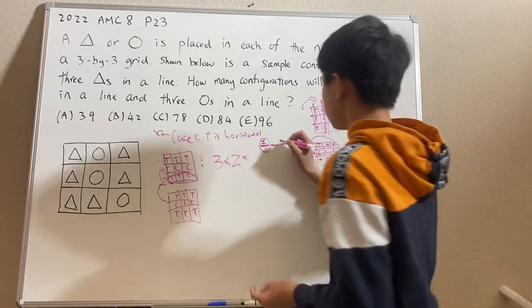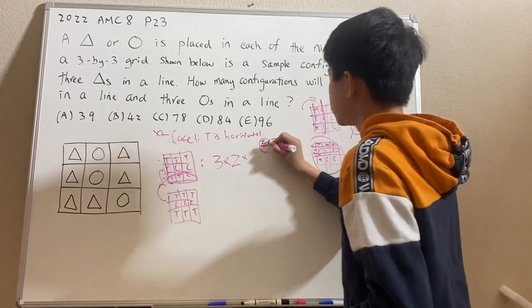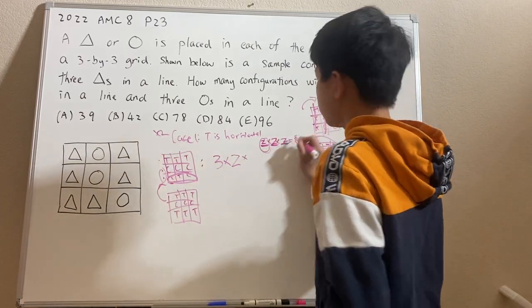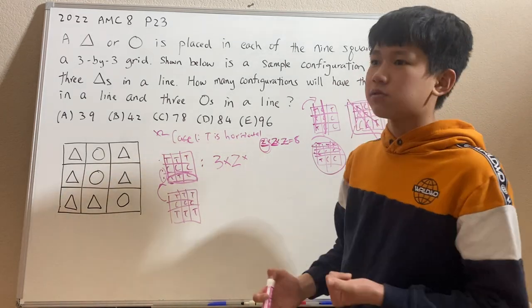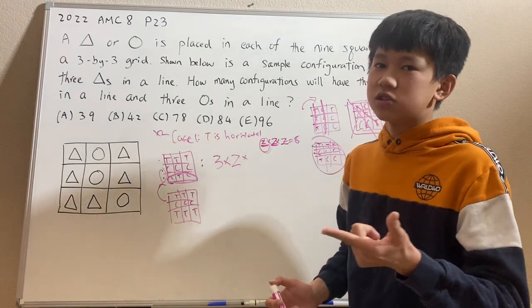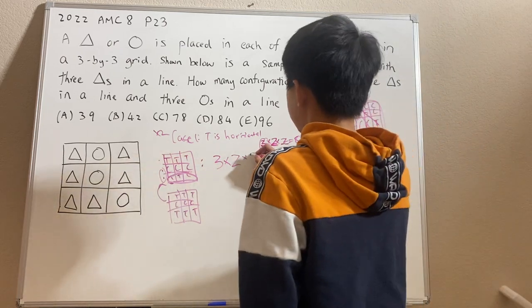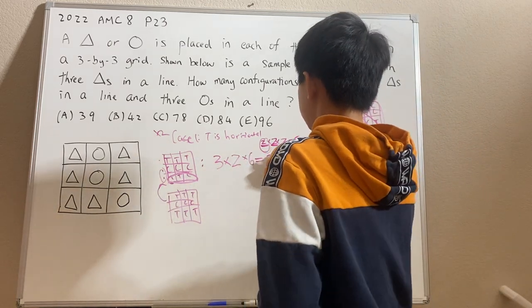And similarly, for this one, T or C. That's another two, and it's another two. So you multiply all of them. There's eight total combinations for this bottom row. Now we don't want them to be TTT or CCC. So minus two. So times minus two, that's six. So that's a total of 36.